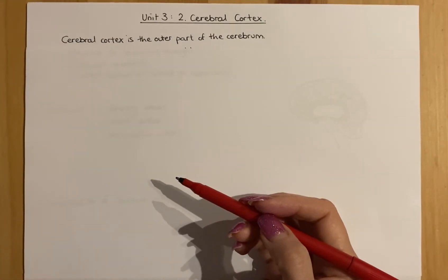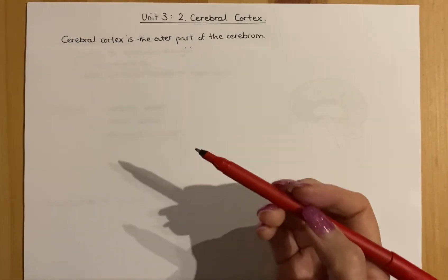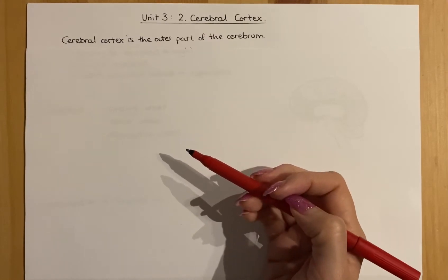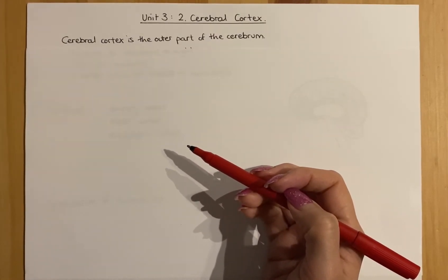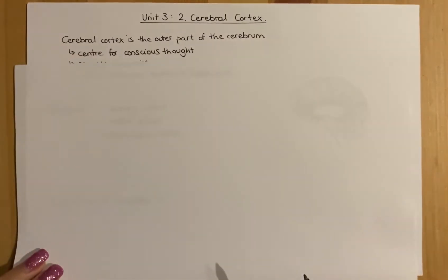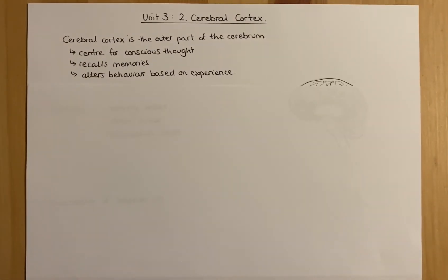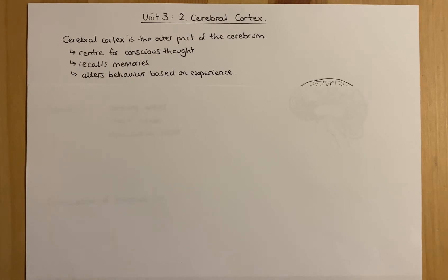If you think back to National 5, you'll know the function of the cerebral cortex. It's generally to do with personality, conscious thought, and memories. It's the center for conscious thought, it recalls memories, and it will also alter your behavior based on experience. For example, if you get bitten by a dog, you tend to avoid dogs — that's altering how you act based on experience, and it involves memories.